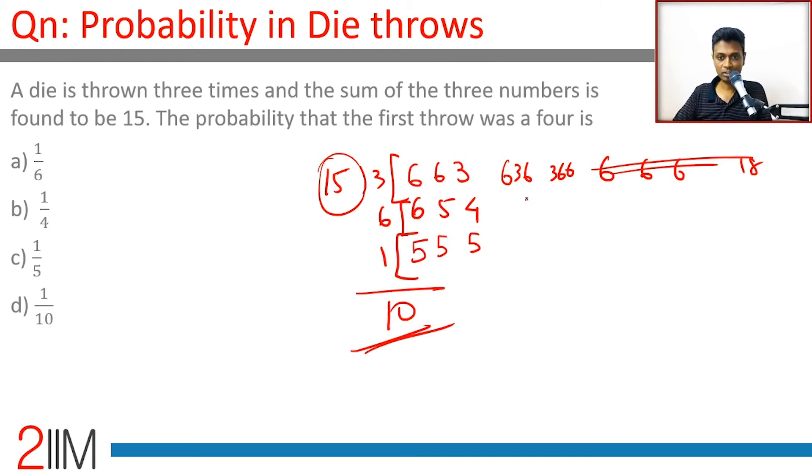The probability the first throw was a 4: not in 6 6 3, not in 5 5 5, only in 6 5 4. It could have been 4 5 6 or 4 6 5. Out of the 10 outcomes, two work for us. To have a sum of 15 there are 10 possible outcomes, out of which 2 will have the first throw as 4. So 2 out of 10, which is 1 out of 5.